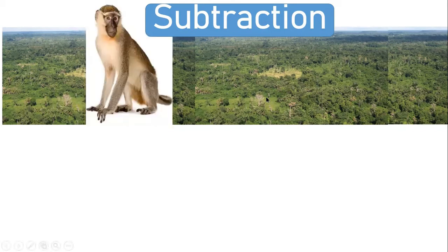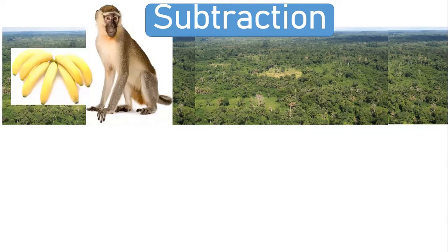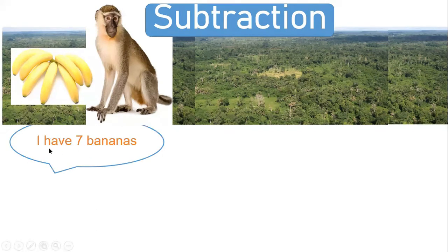Look at that monkey — it has got how many bananas? Let's count: one, two, three, four, five, six, and seven. So it has got seven bananas.